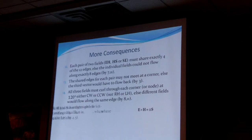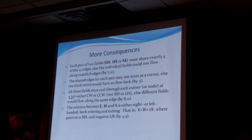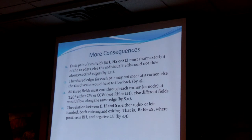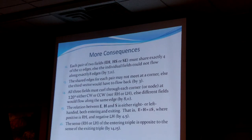The relationship between E, H, and S is either right-handed or left-handed — it's E cross H equals plus or minus S. That's all really a convention. If it goes in one way, it has to come out the other. The exiting triple is opposite to the entering triple. So if one is positive the next one is negative. That's a weakness of the model in my opinion.